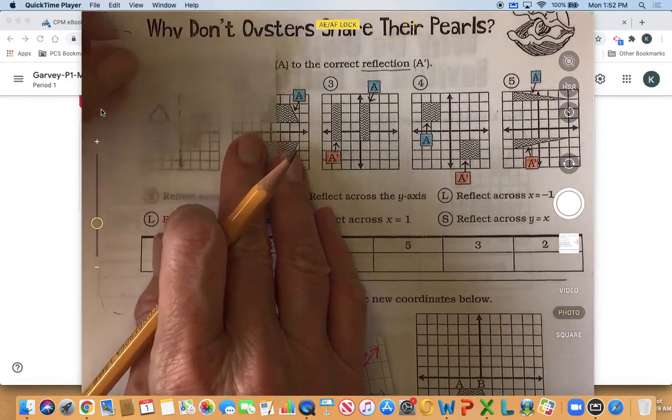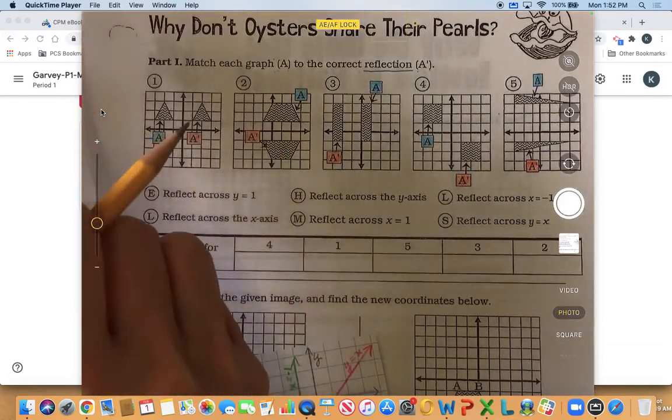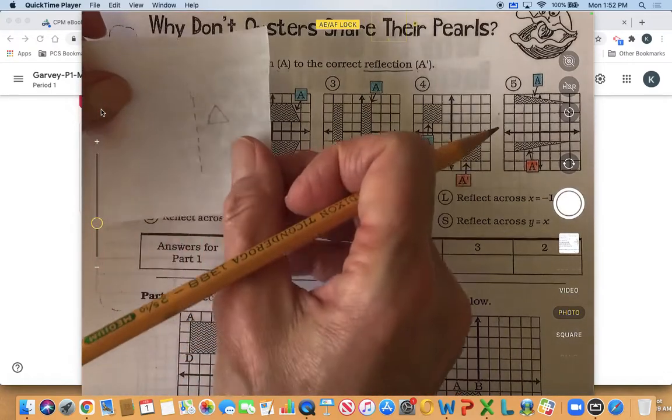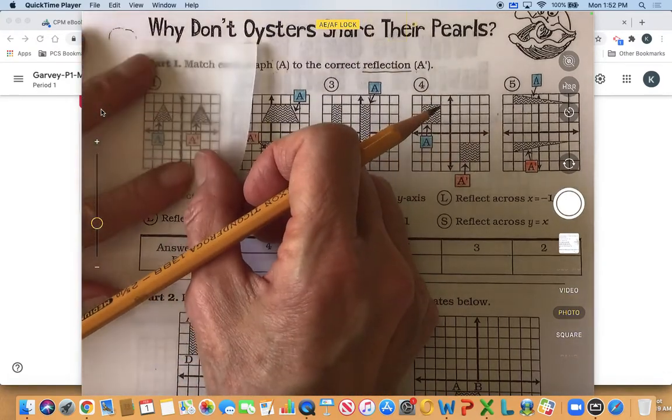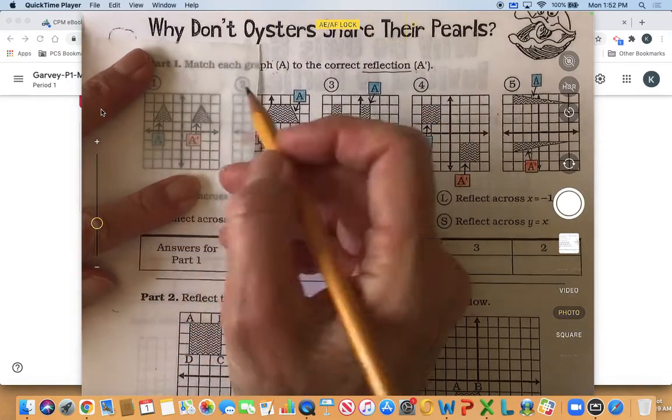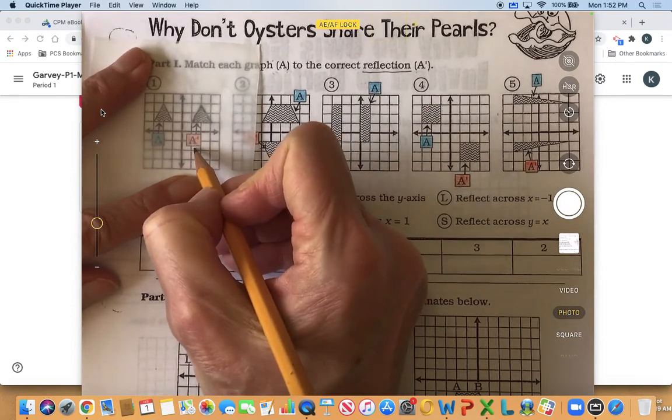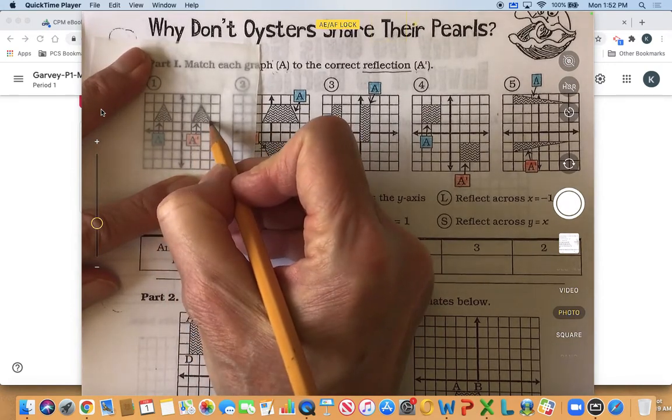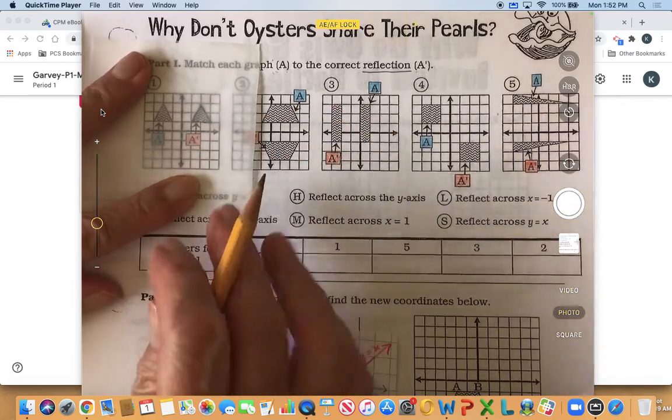Okay and then I can see, okay if I reflect this or flip it over the y-axis and I'm matching it back up, does it land on top of A prime? And it looks like it does.